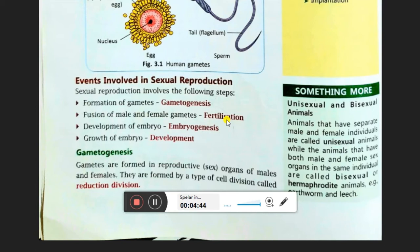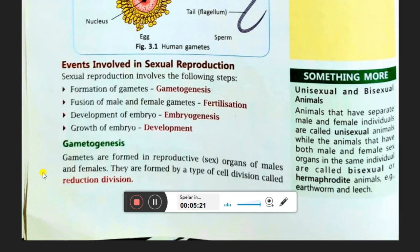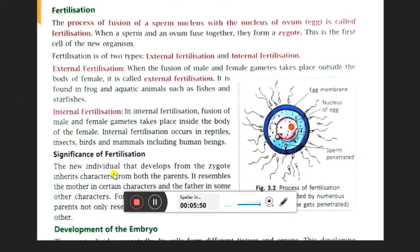Once fertilization is completed, the embryo is formed — this process is called embryogenesis. Once the embryo forms it starts developing into a new individual, and that process is called development. So the four steps are: gametogenesis, fertilization, embryogenesis, and development. The reproductive cells are formed in the reproductive organs of males and females by a type of cell division called reduction division.